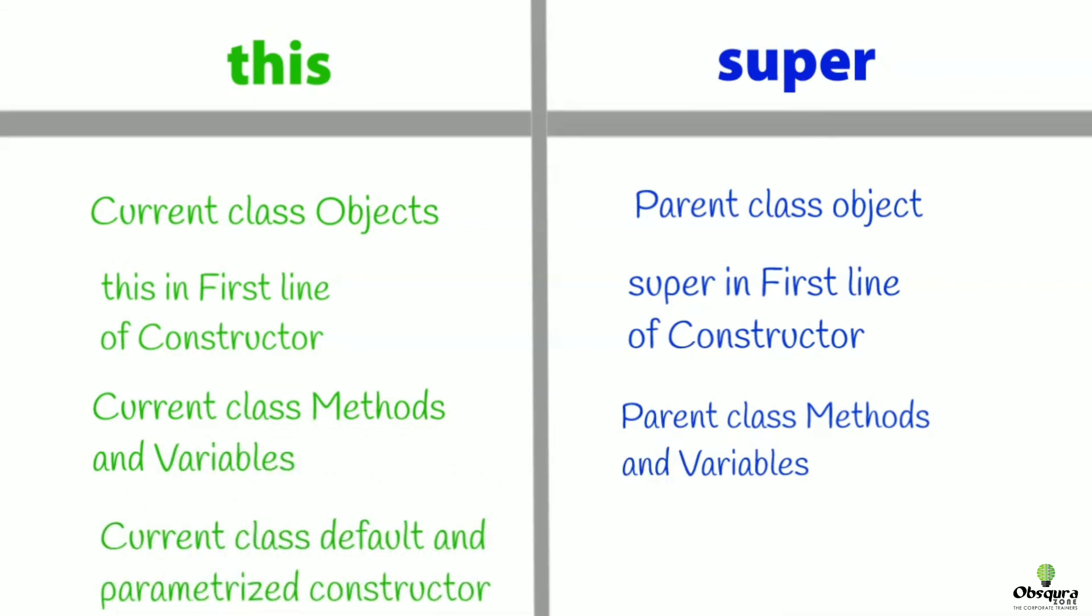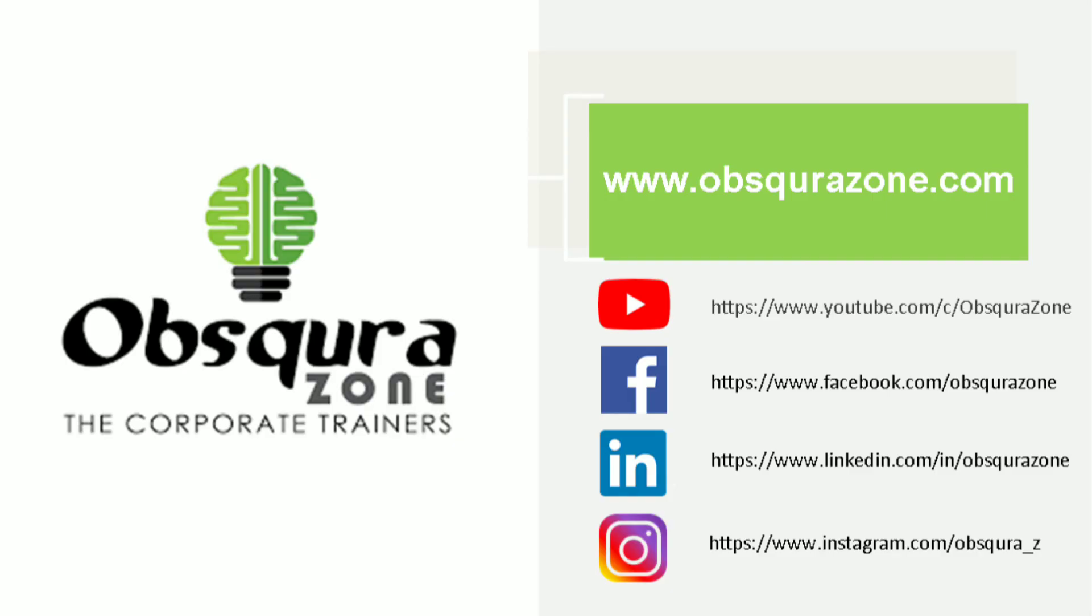This acts as current class constructor and can be used in parameterized constructors. Super acts as immediate parent class constructor and should be first line in child class constructor.